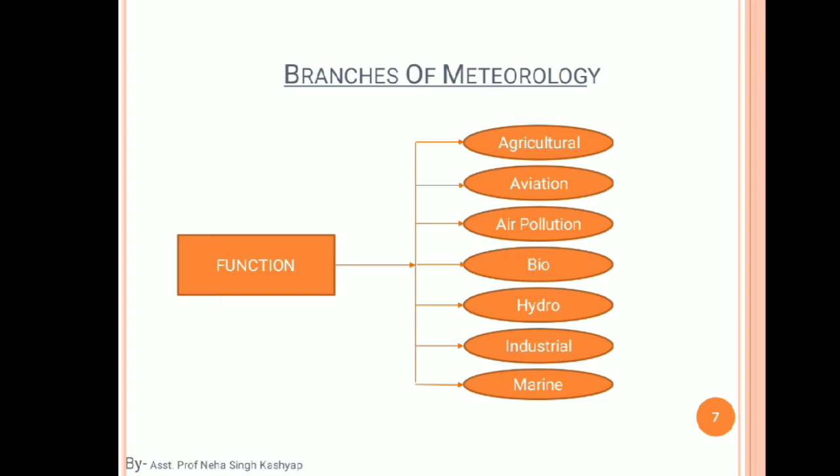Aviation meteorology deals with the impact of weather on air traffic management — the velocity and direction of air, and what is happening in the airspace. Just as we have road traffic and rail traffic, aviation meteorology studies air traffic management for flights operating in the sky.